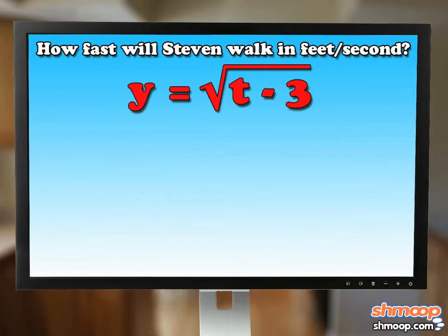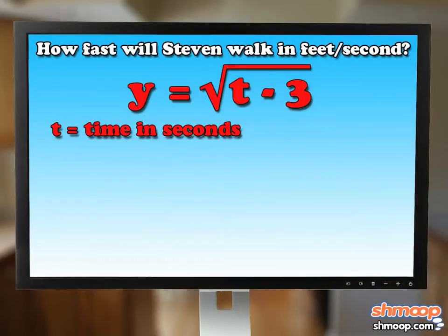The equation is y equals the square root of t minus 3, where t is time in seconds, and y is feet.